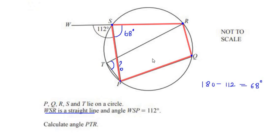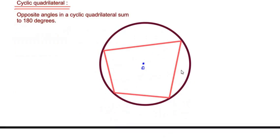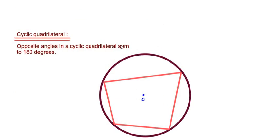It is a cyclic quadrilateral within the circle. There is a circle theorem which explains cyclic quadrilaterals. The circle theorem we are going to use is called the cyclic quadrilateral theorem, which states that opposite angles in a cyclic quadrilateral sum to 180 degrees.